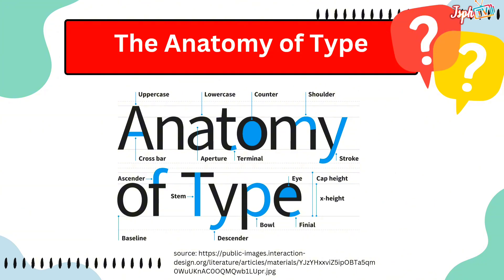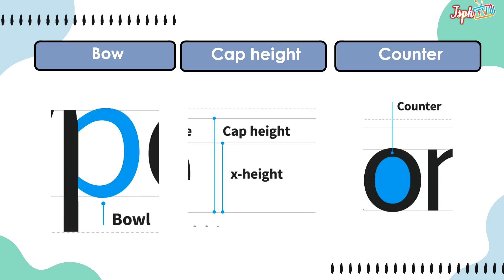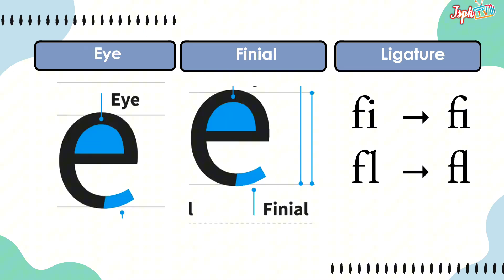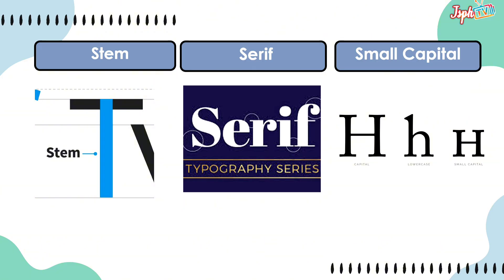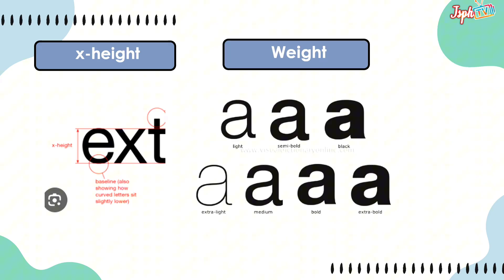The anatomy of type includes: the aperture, ascender, baseline, bowl, cap height, counter, crossbar, descender, dot, eye, finial, and ligature, lowercase, shoulder, spine, stem, spur, and small capital, stroke, terminal, uppercase, x-height, and weight.